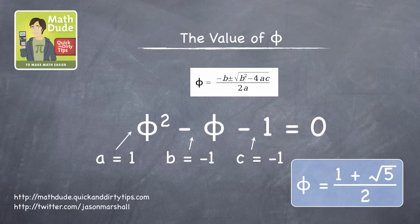In other words, whereas 1.618 is an approximation to phi, 1 plus the square root of 5 over 2 is the exact value of phi.